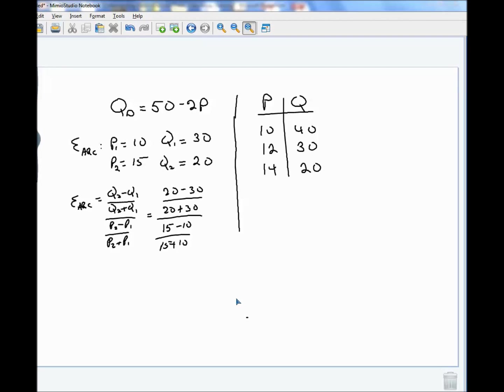But if this is P1, then that needs to be Q1. And if this is P2, that needs to be Q2. So that's kind of a joke. But keep your P's and Q's together and you should be all right. It doesn't matter which one is P1 and which one is P2. All right, so I cleaned up this math a little bit. 20 minus 30 is minus 10 over 20 plus 30 is 50.